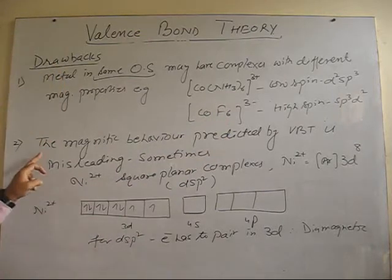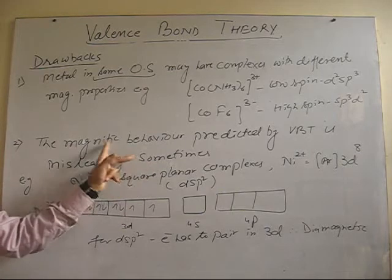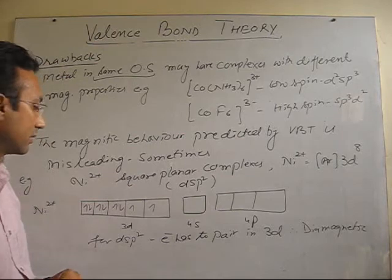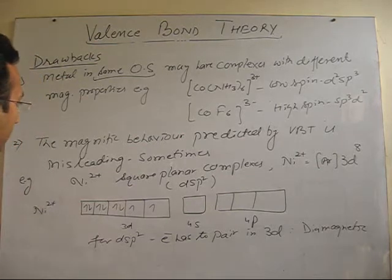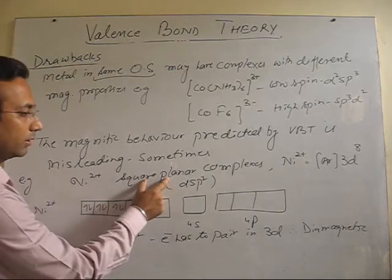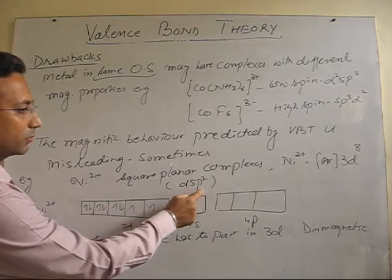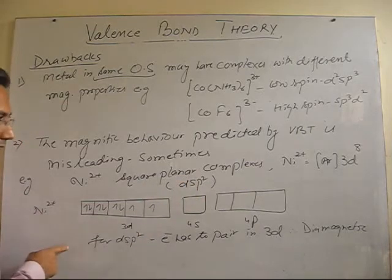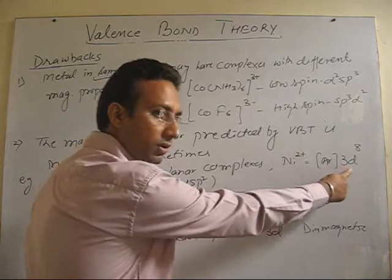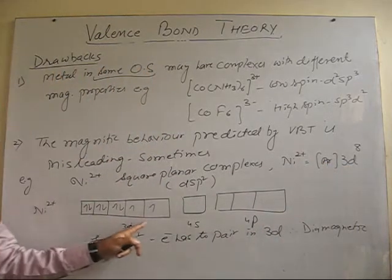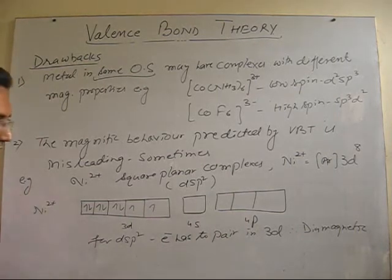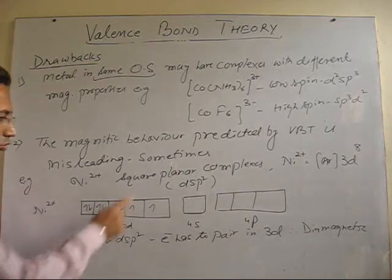Secondly, sometimes magnetic behavior predicted by VBT is misleading. In few cases, we will see here. Let's take one example. If I talk about nickel 2 complex, which is square planar, that is hybridization dsp2. Then, let's discuss this according to VBT. Nickel 2+ having this configuration, this is 3d8, 4s0 and 4p0, nickel 2. Now, if this complex is square planar, that is, it will undergo hybridization dsp2,